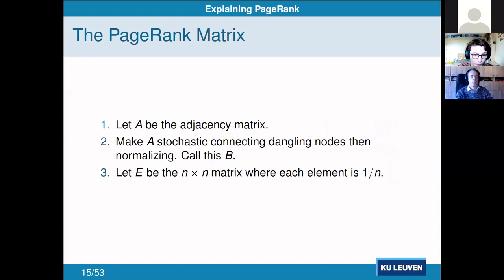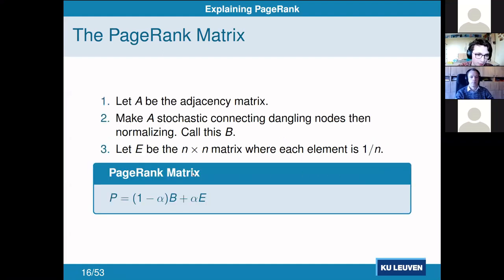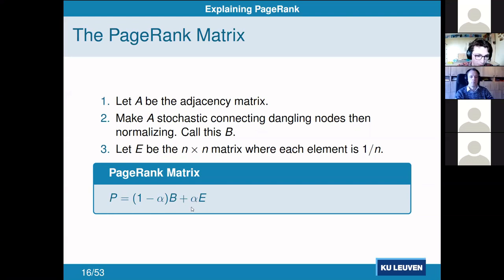Finally, we add in the teleportation probability. We had a probability alpha that our web user would just teleport at random. The probability of going to any website from any other is the same: if we have n nodes, it's 1/n. We take an n-by-n matrix E where each element is 1/n, and combine everything: P = (1 − alpha) * B + alpha * E. This gives a stochastic matrix because both B and E are stochastic and we've combined them with weights summing to one.